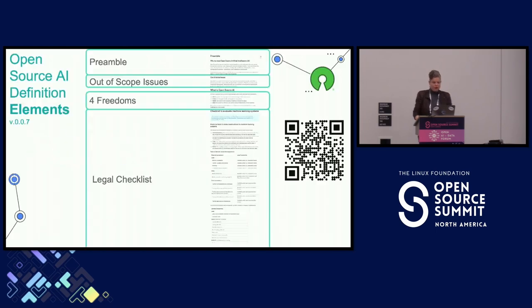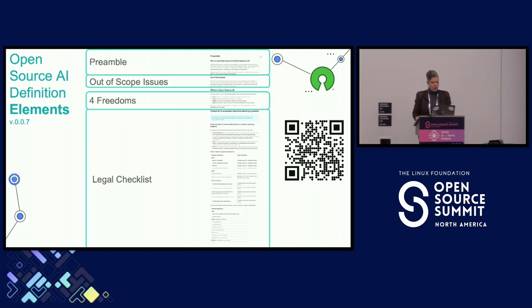We are currently on version 0.0.7 of the definition. That QR code will take you to our HackMD instance where you can view and comment on the document. There is a preamble about why it's necessary, some out-of-scope issues, the four freedoms for open source AI, and a legal checklist of required and optional components. The first part is done-ish — we're still working on it but currently focused particularly on the legal frameworks for the different components.